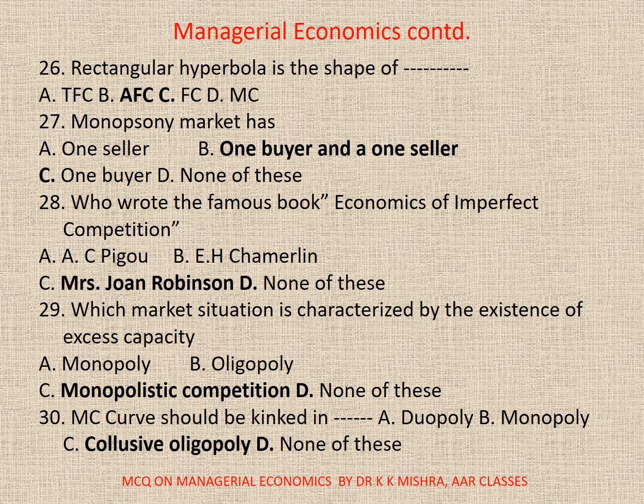27. Monopsony market has: A. One seller, B. One buyer and one seller, C. One buyer, D. None. Correct option is C. One buyer.